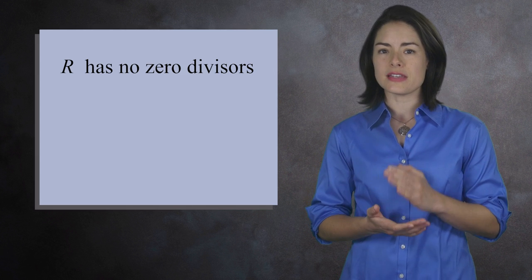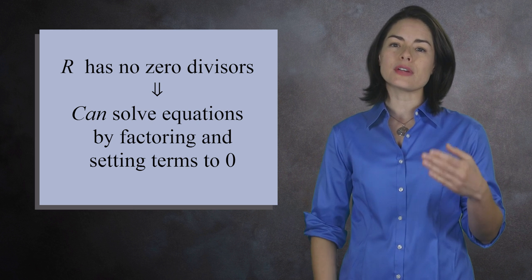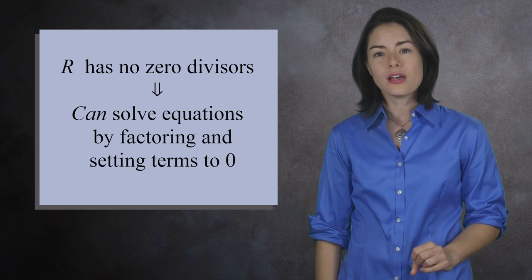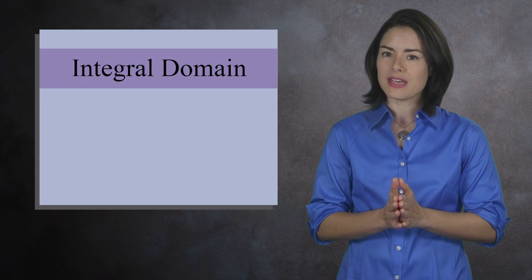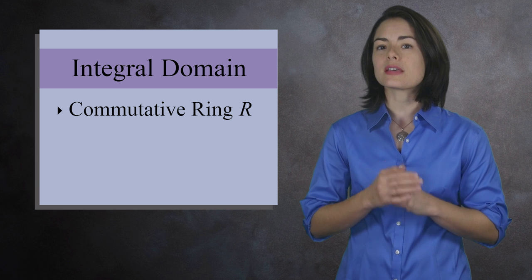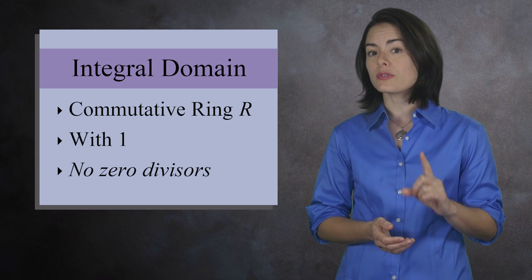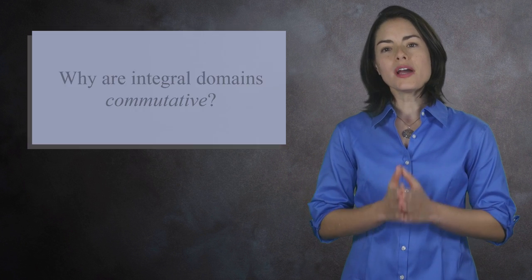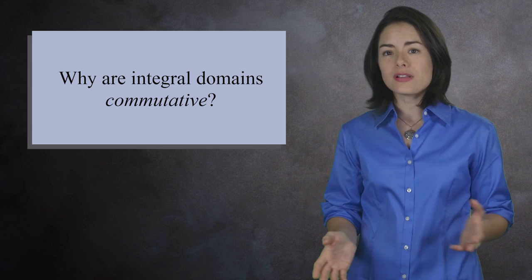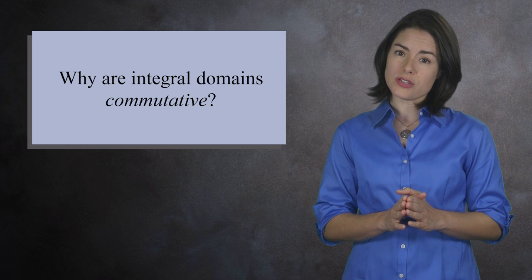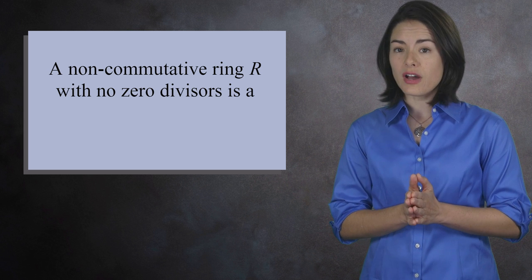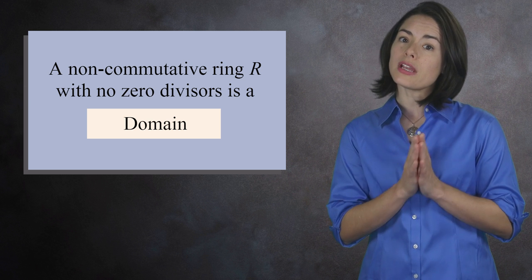When a ring R does not have any zero divisors, the traditional technique of solving an equation by factoring and setting the terms to 0 does work. For this reason, there's a term for such rings: integral domains. An integral domain is a commutative ring R with a multiplicative identity 1 and no zero divisors. There is also a term for an arbitrary ring with no zero divisors — a domain — but you'll encounter integral domains more frequently.